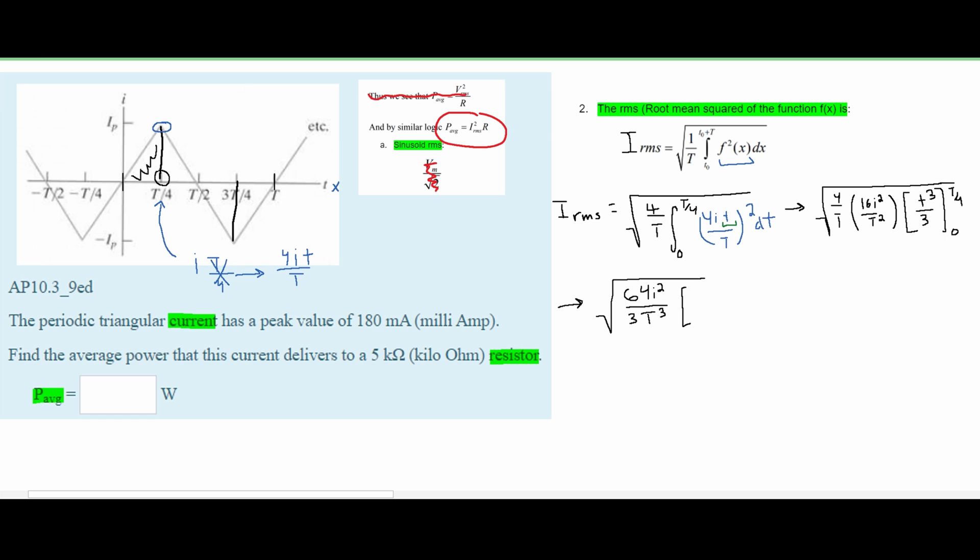Now I'm going to combine all of the constants as much as I can. Now we can plug in our T over four and our zero. From this we get T cubed over 64 minus zero. So we're just not going to include the zero. From here I can cancel some things out. We can get rid of the 64 and the T cubed. And we're going to be left with I_rms equals the square root of I squared over three. And this is our I_rms.